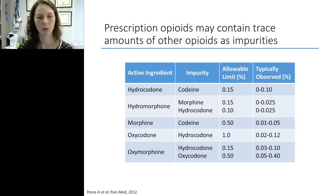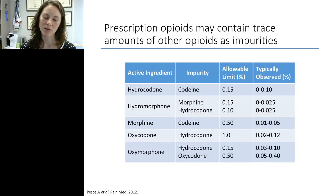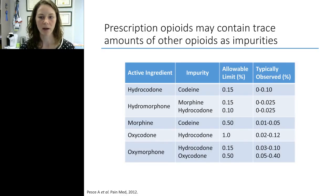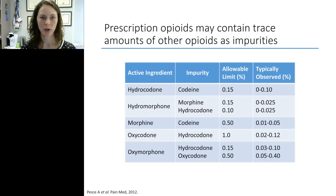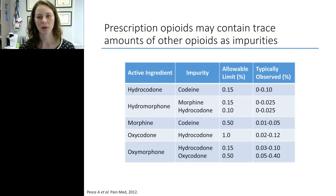Morphine pills can contain a small amount of codeine — since these are opiates derived from natural sources, as part of the purification process a small percentage of codeine may be present. There are allowable limits for impurities in these drugs, and the typically observed amounts are very small. If pharmaceutical impurity is the source of a positive result, you would expect very low amounts of the impurity and very high amounts of the active ingredient. For example, a patient on high-dose chronic oxycodone might show a very small amount of hydrocodone due to pharmaceutical contamination — this is always something to consider during interpretations.